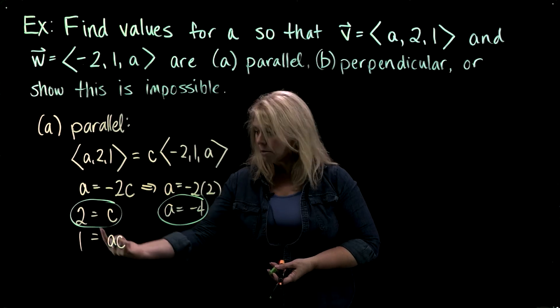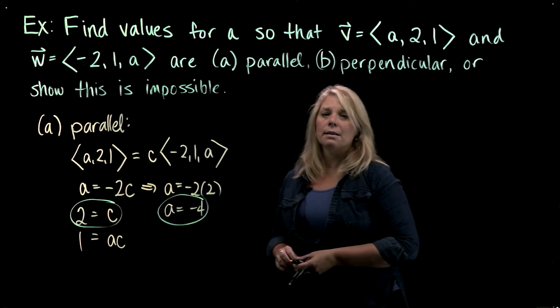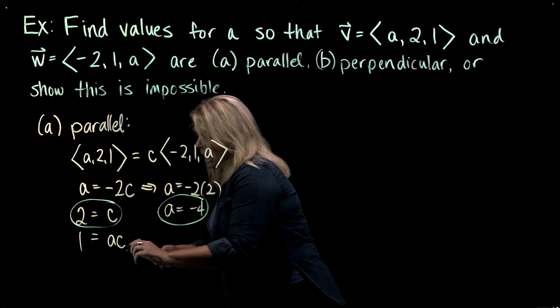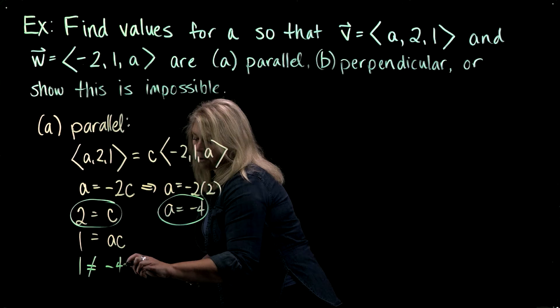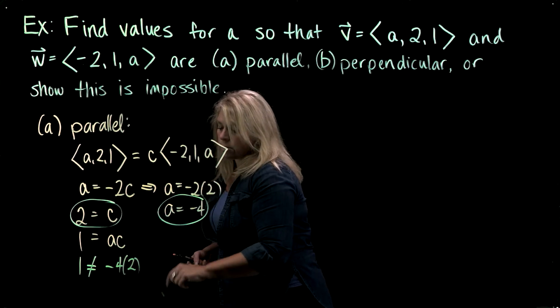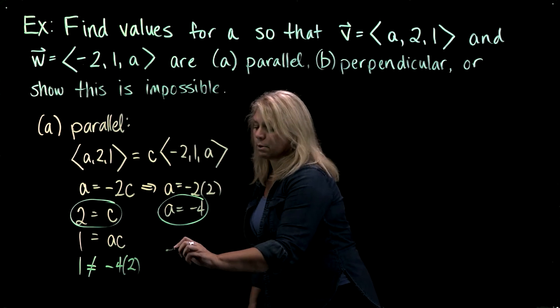You'll notice that they don't. So 2 times negative 4, A times C is not 1. So these don't check. 1 is not equal to negative 4 times 2. So those don't check. So in this case, this particular part of the problem is not possible.